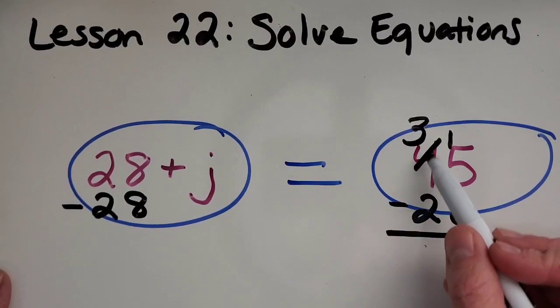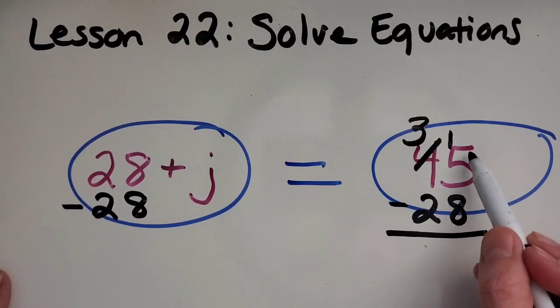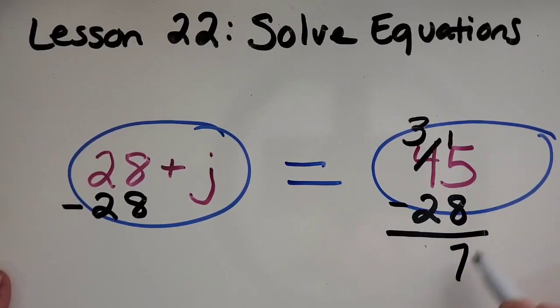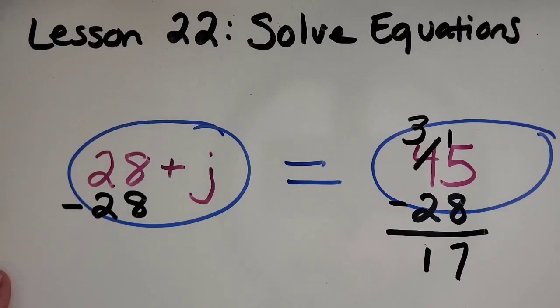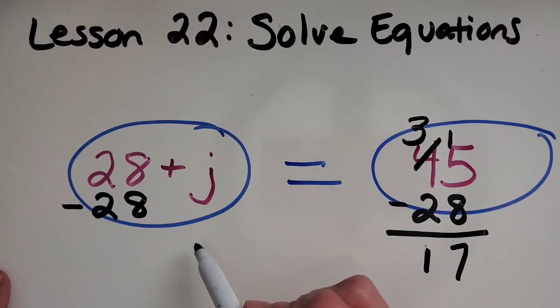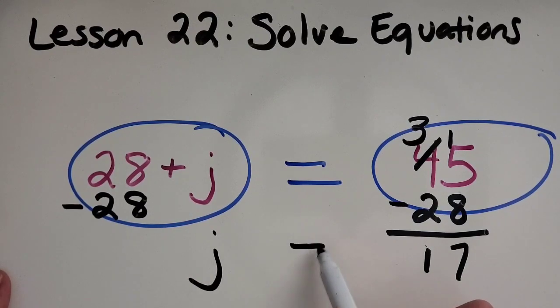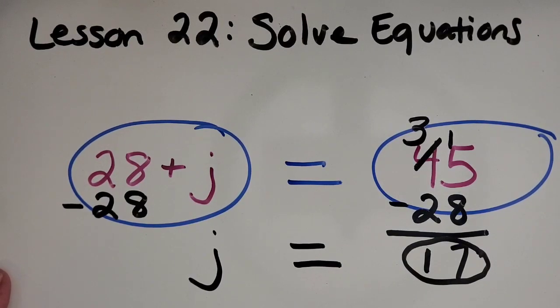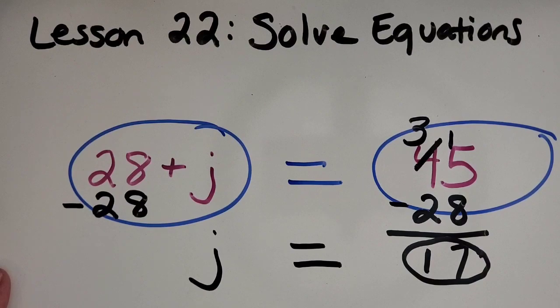Okay, I regrouped, I took a 10 away and put 10 ones over here. 15 minus 8 is 7, 3 minus 2 is 1. So now over here, I have 28 minus 28. Well, that's just nothing. I could just rewrite it as just j equals, and then I've got 17. Okay, so he needs 17 more jalapenos to really have enough for the week.